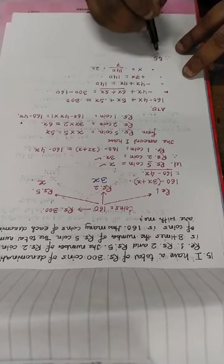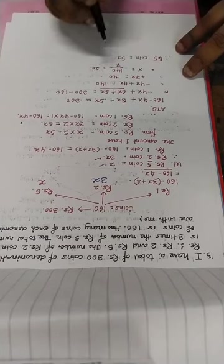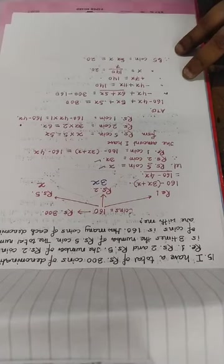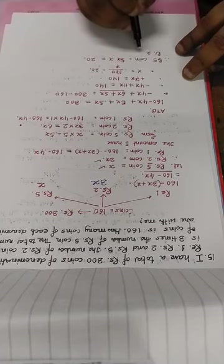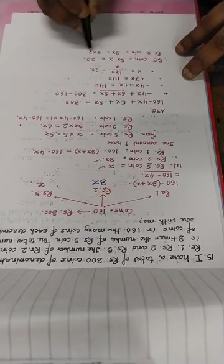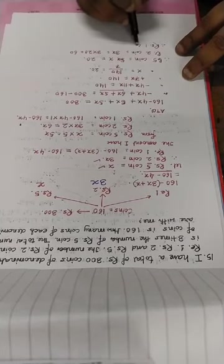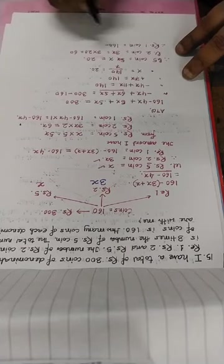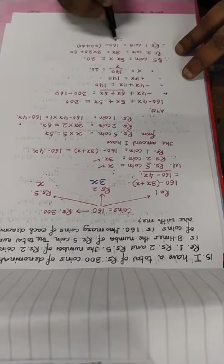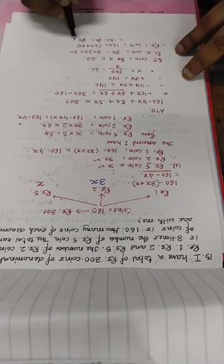Therefore Rs. 5 coin is equal to x, and x is equal to 20, so Rs. 5 coins = 20. Rs. 2 coin is 3x, which is 3 into 20, equals 60. Therefore Rs. 1 coin is equal to 160 minus 4x, which is 160 minus 80, equal to 80 coins.